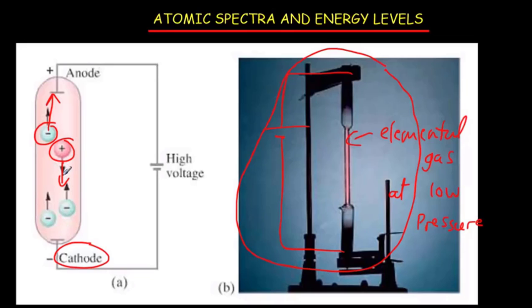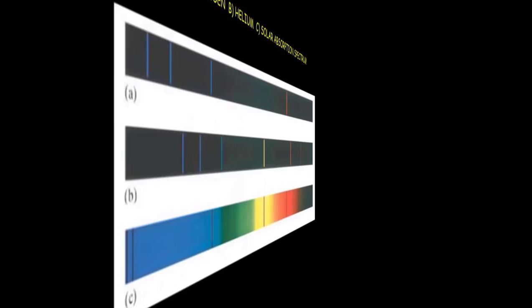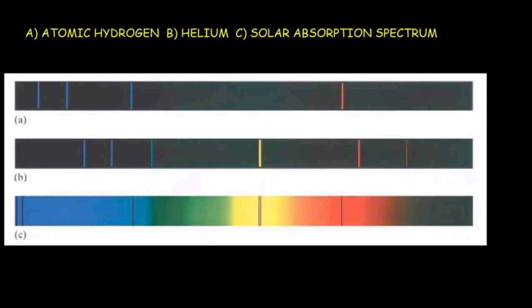Then they lose that energy by emitting light. So when we're talking about the emission spectrum from these elemental gases, that glow coming off the discharge tube is light energy produced as the atoms de-excite. It turns out the light coming off each elemental gas is different, and it characterizes that gas very well. The special characteristic it has is what we call discrete line spectra.